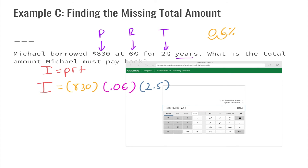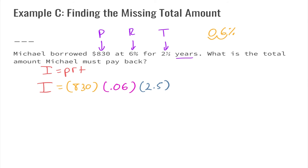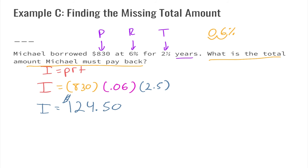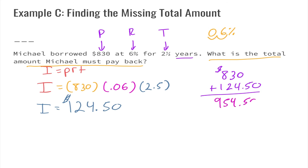The calculator gives us one hundred and twenty-four dollars and fifty cents for our interest. But that's not what the problem asked — it asked for the total amount Michael must pay back. He's not paying back just the interest; he also has to repay the eight hundred thirty dollars he originally borrowed. So to find the total: eight hundred thirty dollars plus one hundred and twenty-four dollars and fifty cents equals nine hundred and fifty-four dollars and fifty cents. Don't forget the dollar sign because this is a word problem.